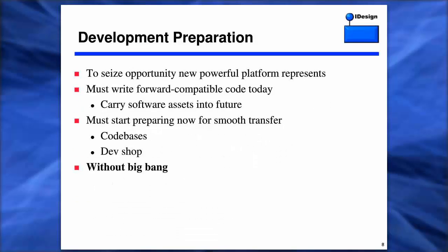To seize the capabilities of this new platform, you need to start writing forward-compatible code today that allows you to carry your software assets forward into the future. You need to prepare your code base and your development shop for a smooth transition — getting them up on the new programming models and operational aspects of the fabric. You need to do this without a big bang. We know big bangs don't work. The majority of you have a great deal of value encapsulated in your existing software assets, so you need to find a way to break up your monolith and move it forward.